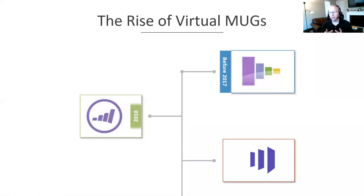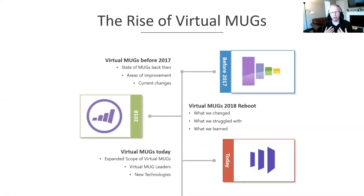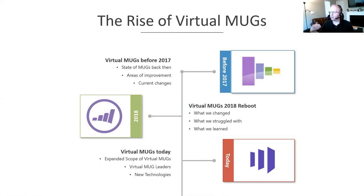We're going to go through a timeline. My perspective starts from when I joined the community in late 2017, November/December 2017. I've been working with Marketo for a couple of years prior to that, but my time in the Marketo community specifically was really in that late 2017, early 2018 period. We've got some vintage Marketo logos here. We'll talk about the evolution of the user group community since the time of kind of rebirthing virtually.